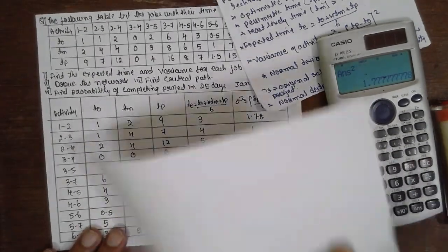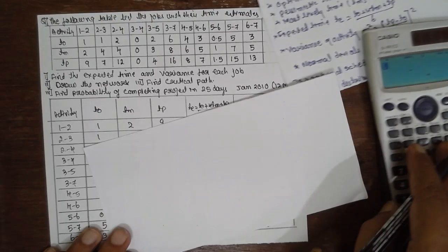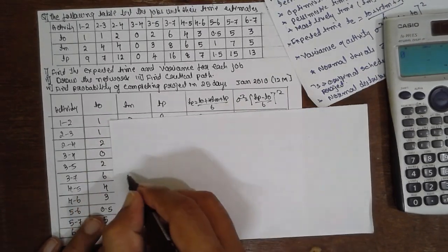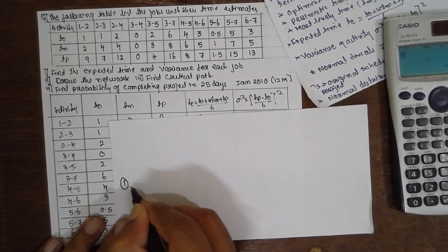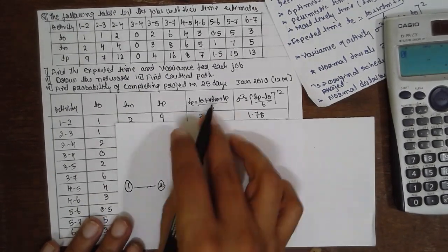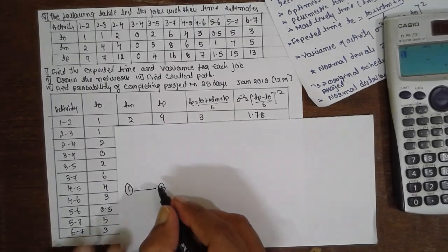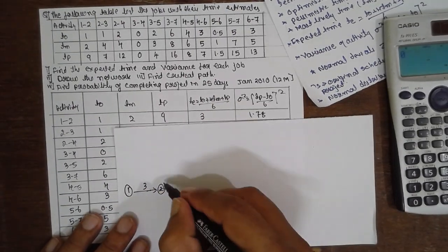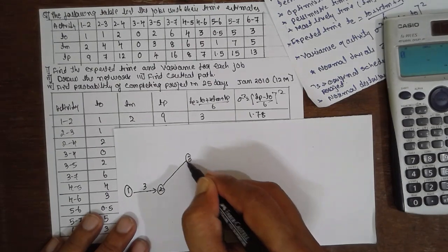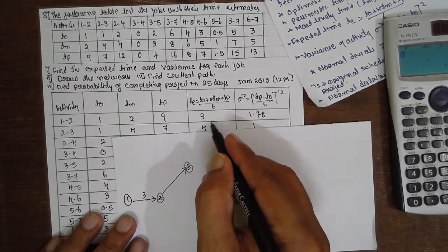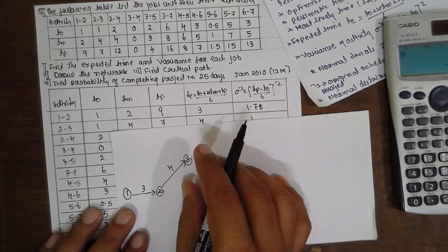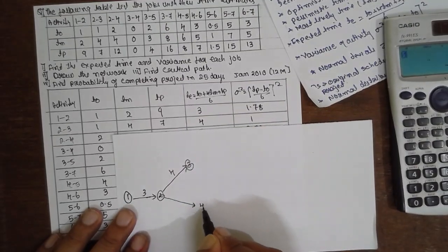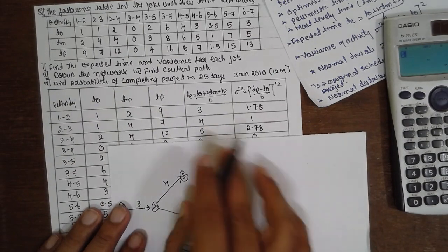Let us draw the network diagram here. 1 and 2. What is TE value? TE value is 3 here. 1 and 2 is 3. Next, 2-3. 2-3, it is 4. Next, 2-4. 2-4, the value is 5.